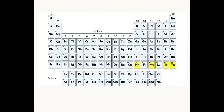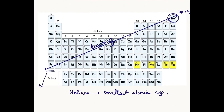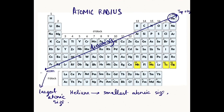Keeping in mind what we've learned, the general trend in the periodic table is: as we go from left to right, the atomic size keeps on decreasing. Helium actually has the smallest atomic size, while the element at the bottom-left has the largest atomic size. This is how we can understand the whole concept of atomic radius and how it varies as we go through the periodic table.